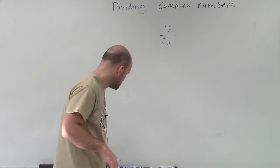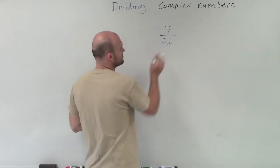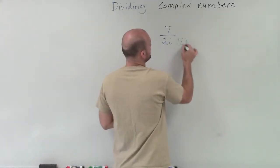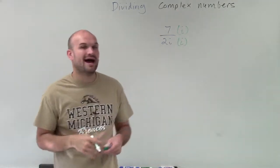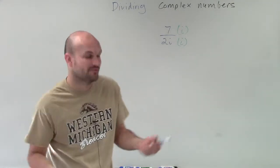So to do that, we'll multiply by i in our numerator and denominator. Since we're multiplying by i in the numerator and denominator, we're just keeping equivalent fractions.